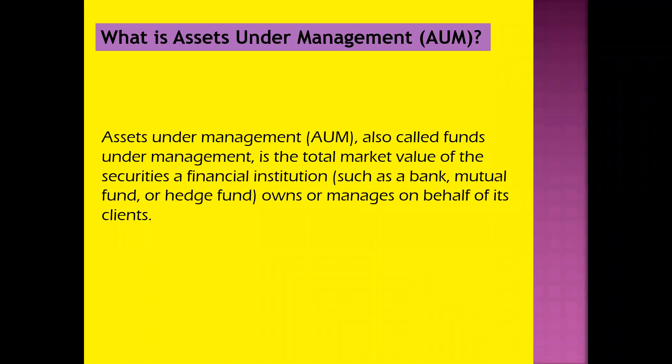The first thing I'm going to tell you is what is AUM and what is the definition of Asset Under Management. Assets Under Management (AUM) is the total market value of the investments that a person or entity manages on behalf of clients. In the calculation of AUM, some financial institutions include bank deposits, mutual funds and cash, whereas other institutions limit it to funds under discretionary management where the investor assigns authority to the company to trade on their behalf.